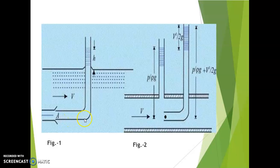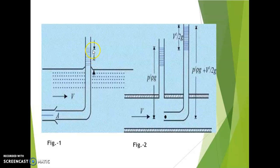In the Pitot tube, when the fluid enters, its velocity becomes 0 and this condition is said to be the stagnation condition. At the stagnation condition, velocity becomes 0 and the pressure is increased. Due to the increase in pressure, the liquid level rises in the Pitot tube and this H will be the measure of velocity. Velocity is given by the formula: V = √(2GH).